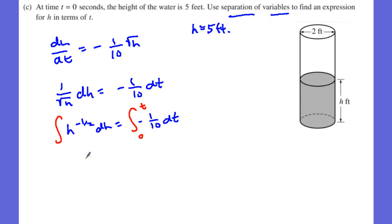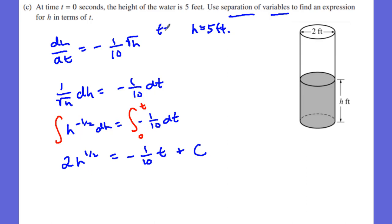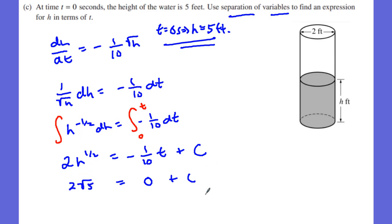Integrating h^(-1/2) gives 2√h, and integrating -1/10 dt gives -1/10 t + C. At time t = 0, the height is 5 feet, so we find C: 2√h at h = 5 gives C = 2√5. Our equation becomes 2√h = -1/10 t + 2√5.